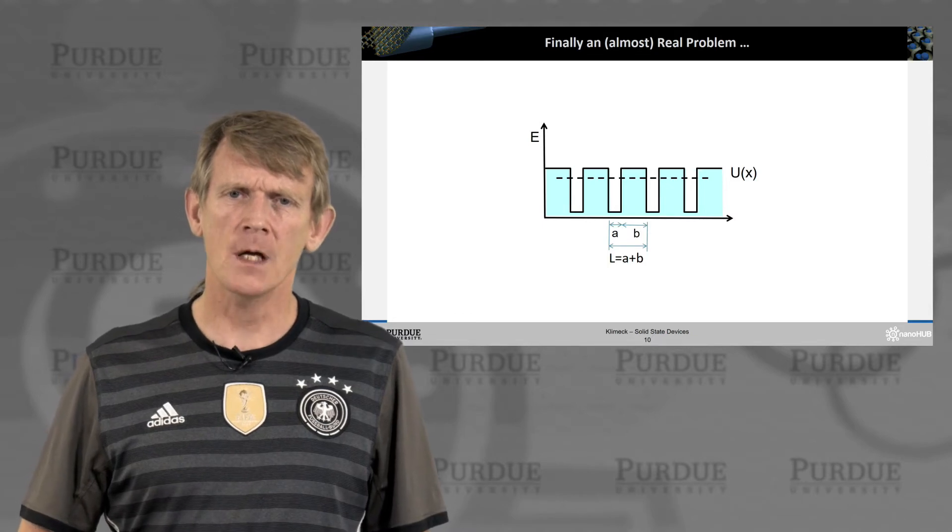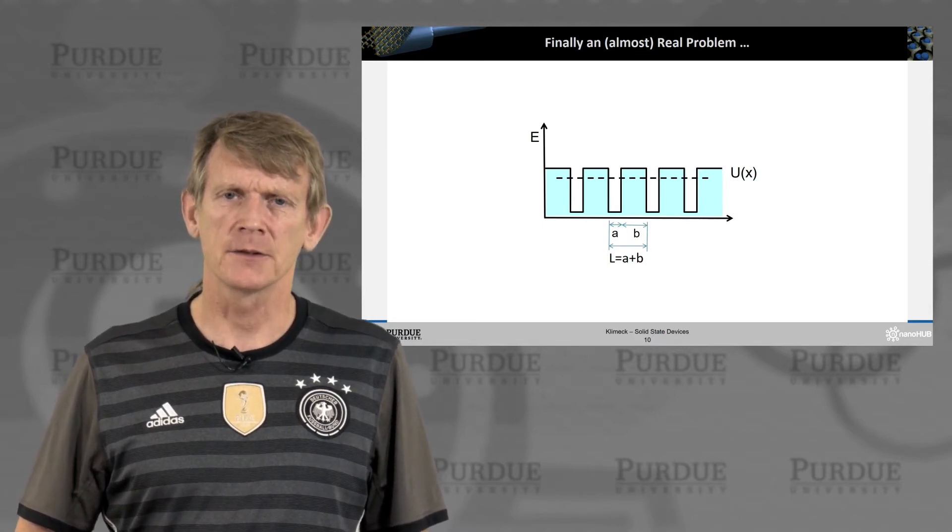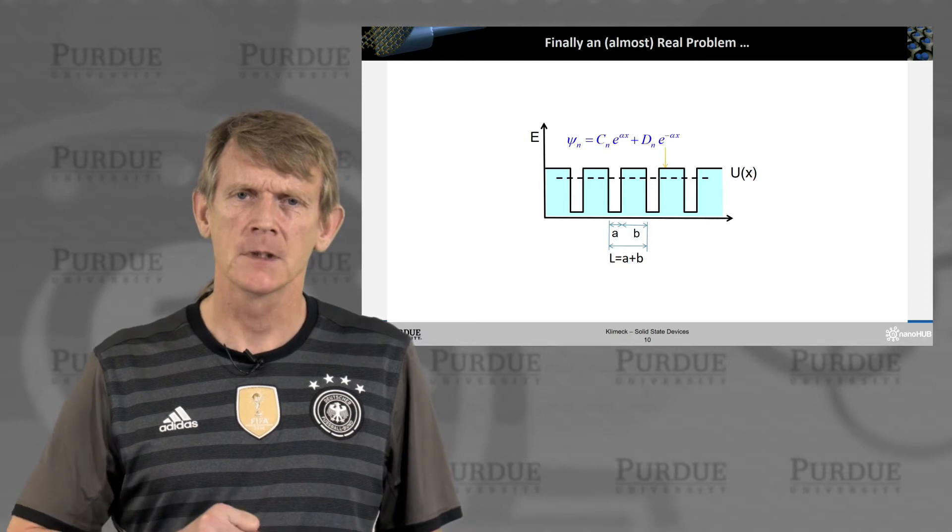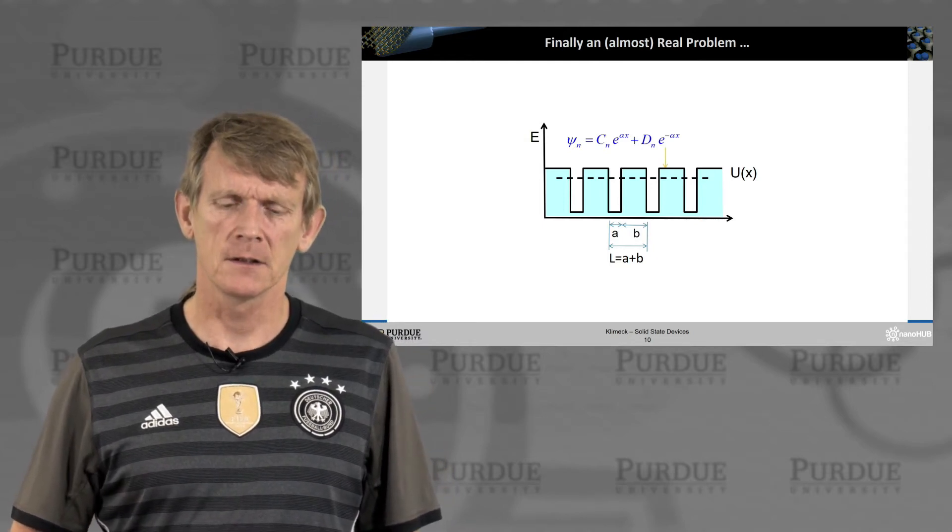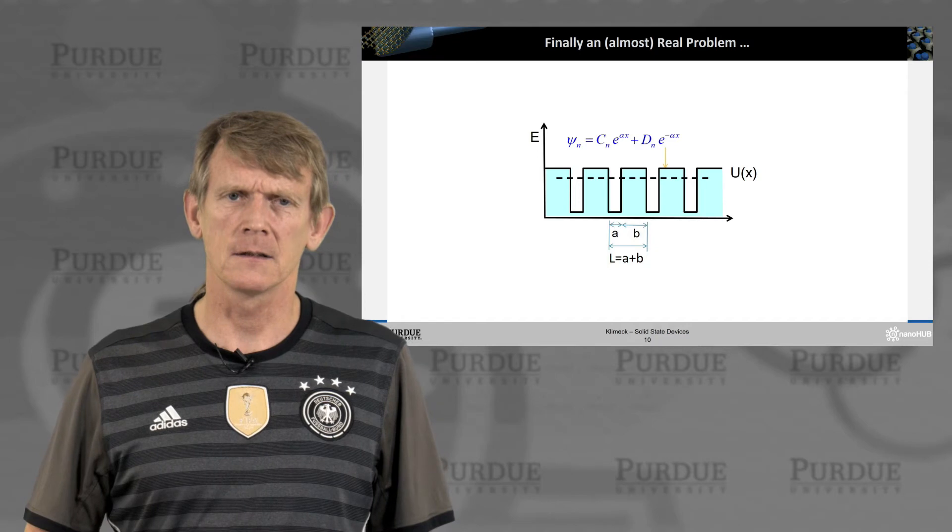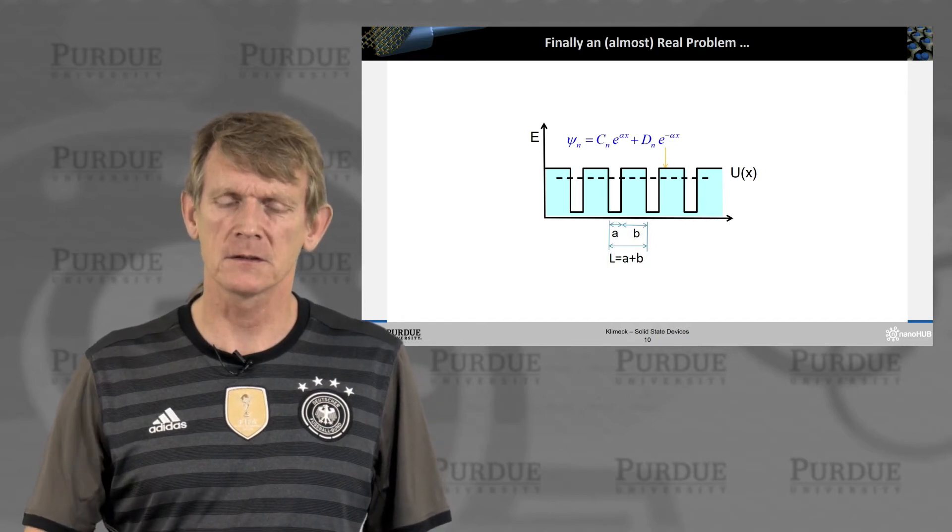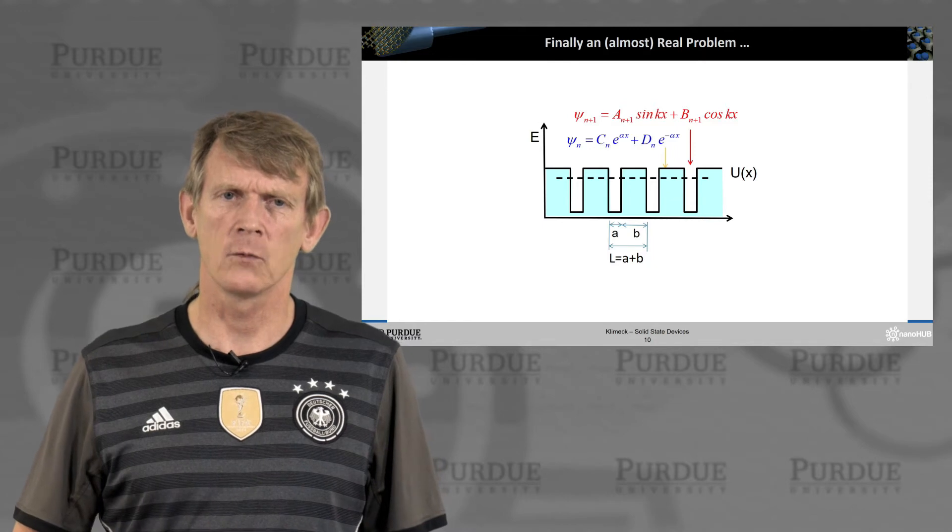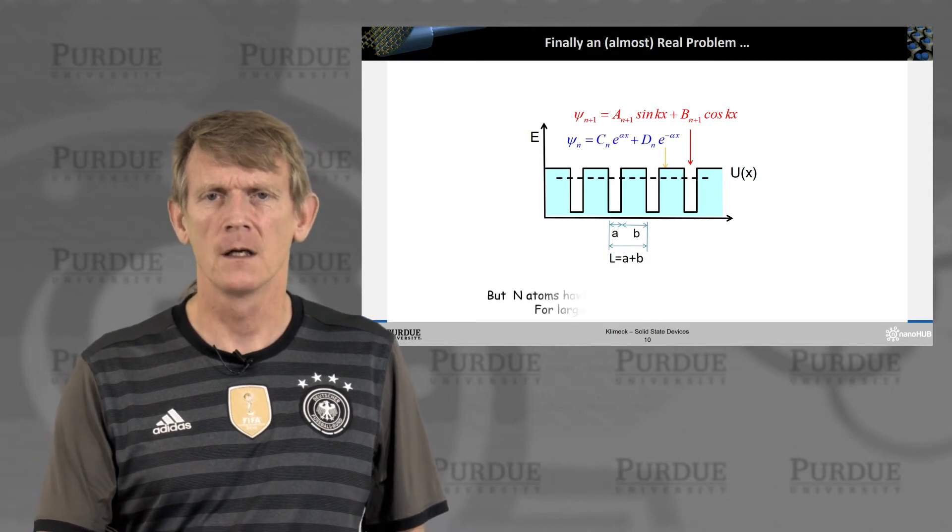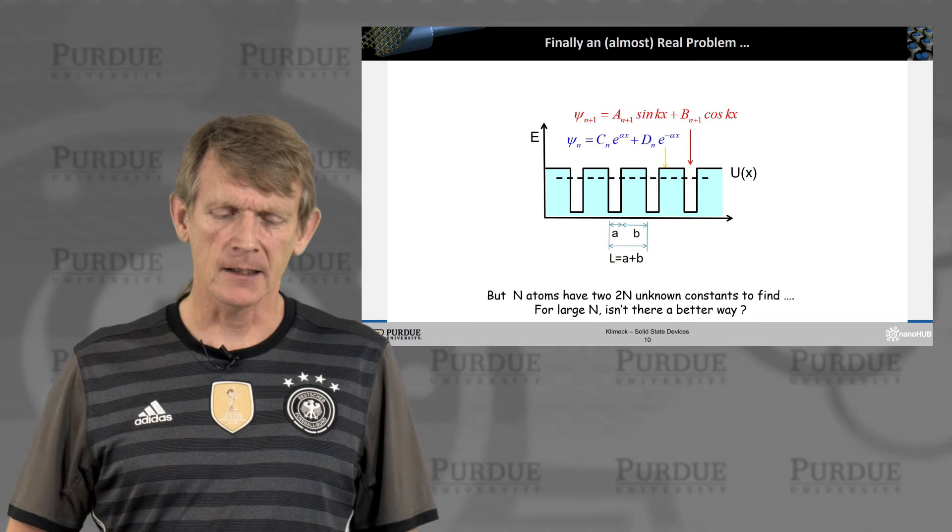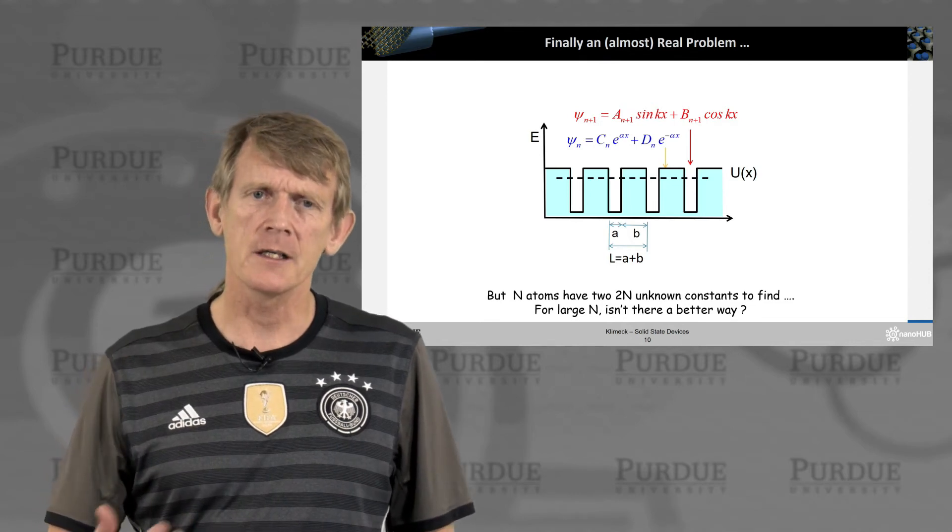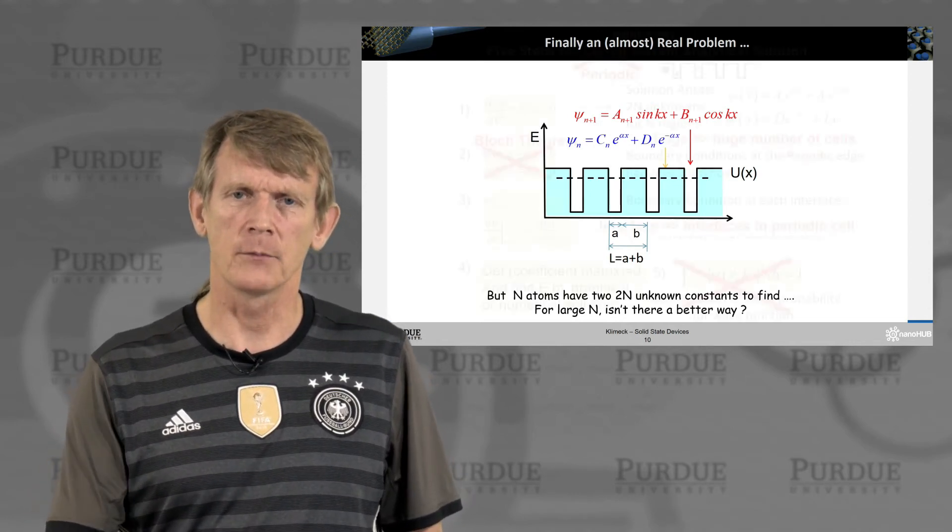So, we'll redefine a unit length cell L that consists of a well that has length A, and a barrier that has length B. And we'll define solutions in the system where the ansatz for a solution inside of the barrier are complex growing and decaying coefficients. And inside the well, we assume an ansatz where we have complex exponentials or sinusoids. So, we have n atoms. We have 2 times n unknowns. And we need to find the coefficients. So, for large n, that would be a pretty complicated problem to solve.